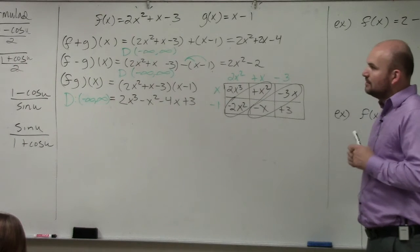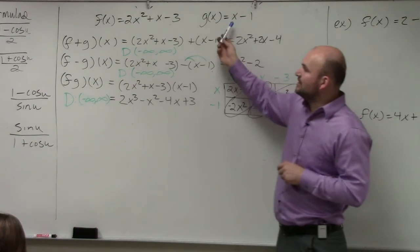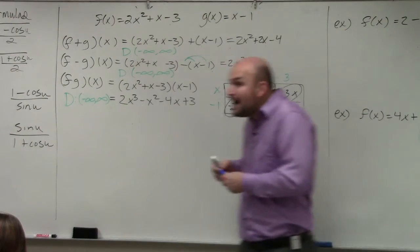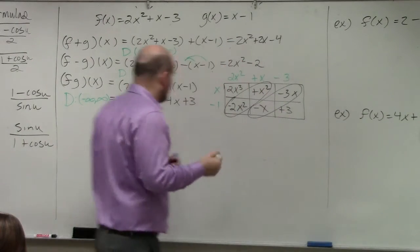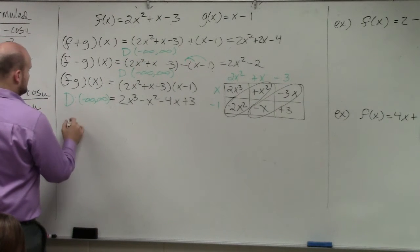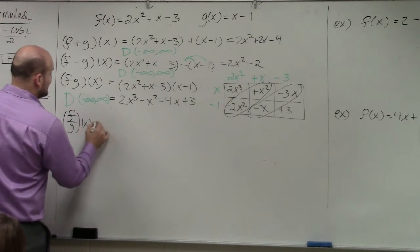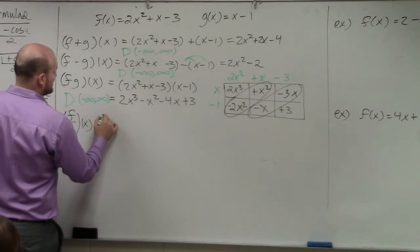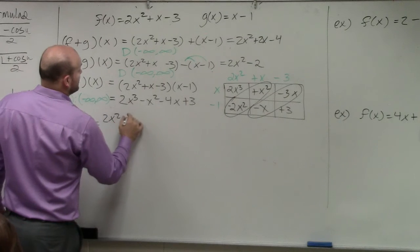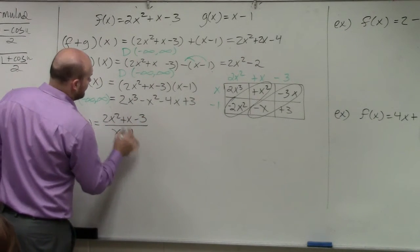For the next one, for the next type of restrictions, what we want to do is we've got to use division. Well, now we know with division we're going to have a denominator. So for my division here, let's do f of g of x. All that simply means is taking your f of x and dividing it by your g of x: 2x squared plus x minus 3 all over x minus 1.